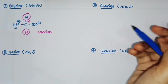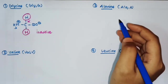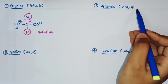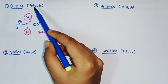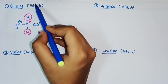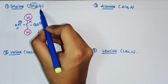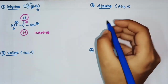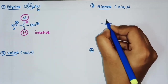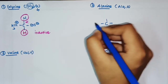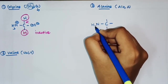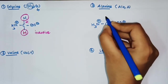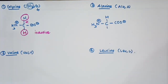The next one is alanine. Before that, note that amino acids are represented by a three-letter abbreviation and a one-letter symbol. For example, in the case of glycine, 'Gly' is the three-letter abbreviation and 'G' is the one-letter symbol. Coming back to alanine, the structure is similar to glycine except for the R group.